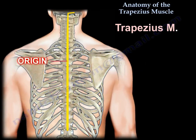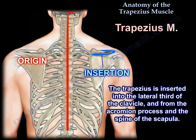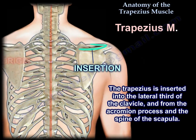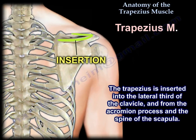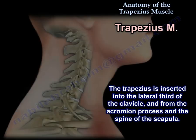The trapezius is inserted into the lateral third of the clavicle and from the acromion process and the spine of the scapula.